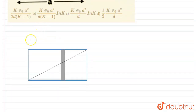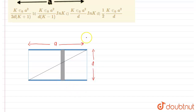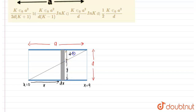Assume a parallel plate capacitor where the side of the plate is A and the distance between the plates is D. We take an element at distance x with thickness dx. The height of the dielectric portion at that point is y, so the remaining height is d minus y. According to the diagram, that element is divided into two parts — one with dielectric constant K and one with air or vacuum — so we have two capacitors connected in series.